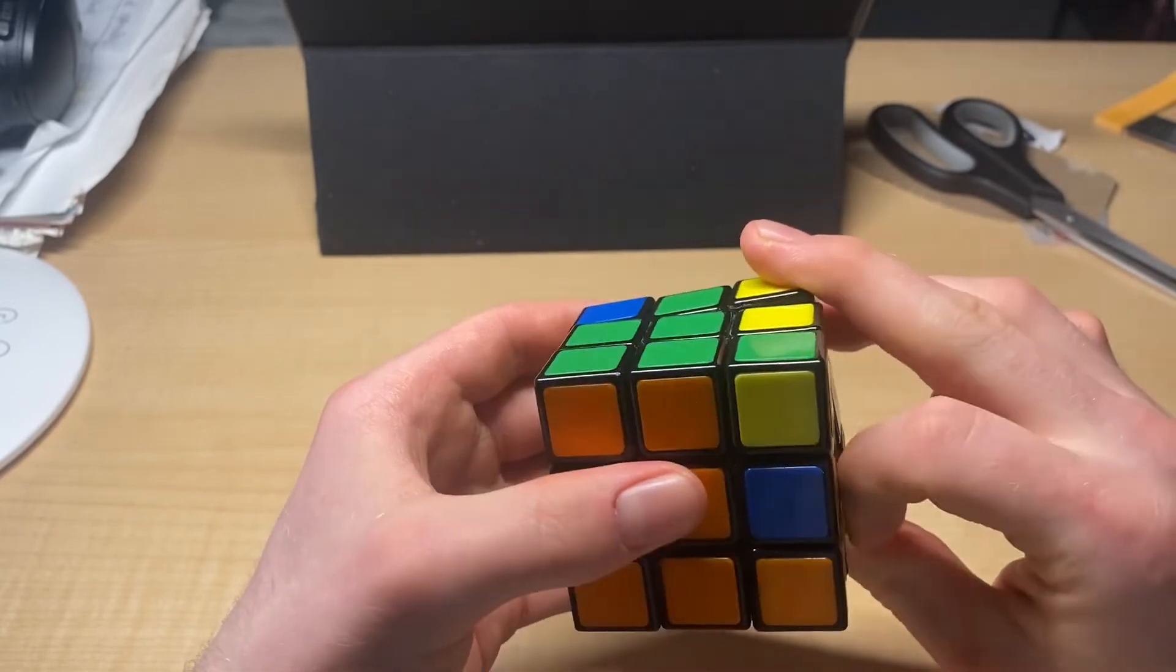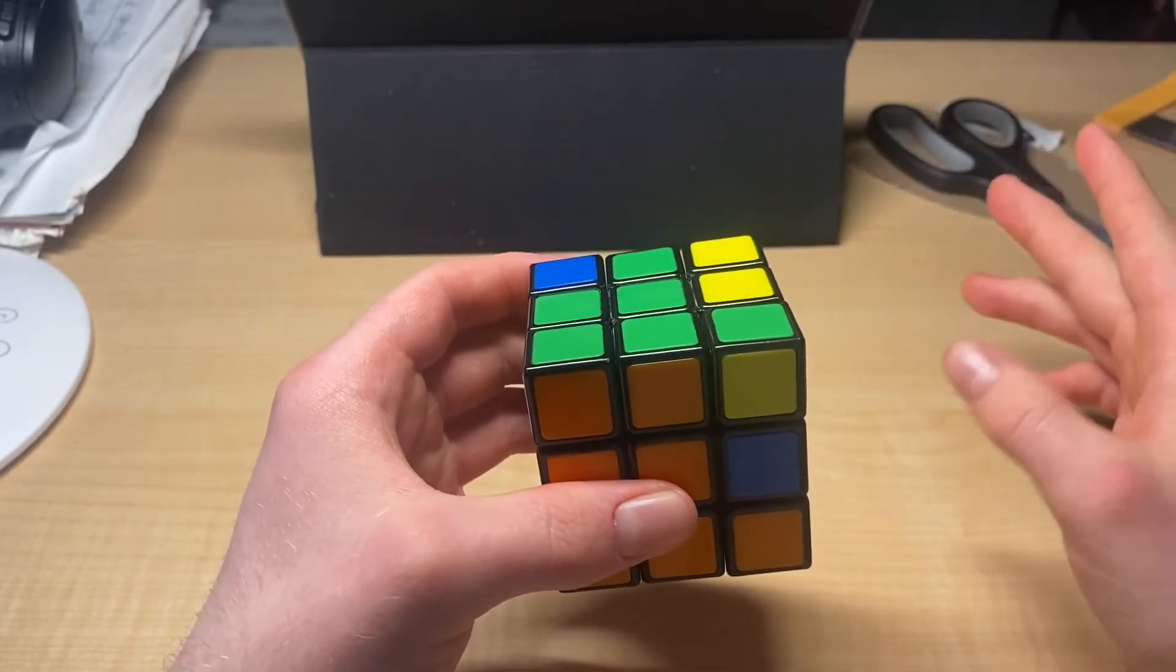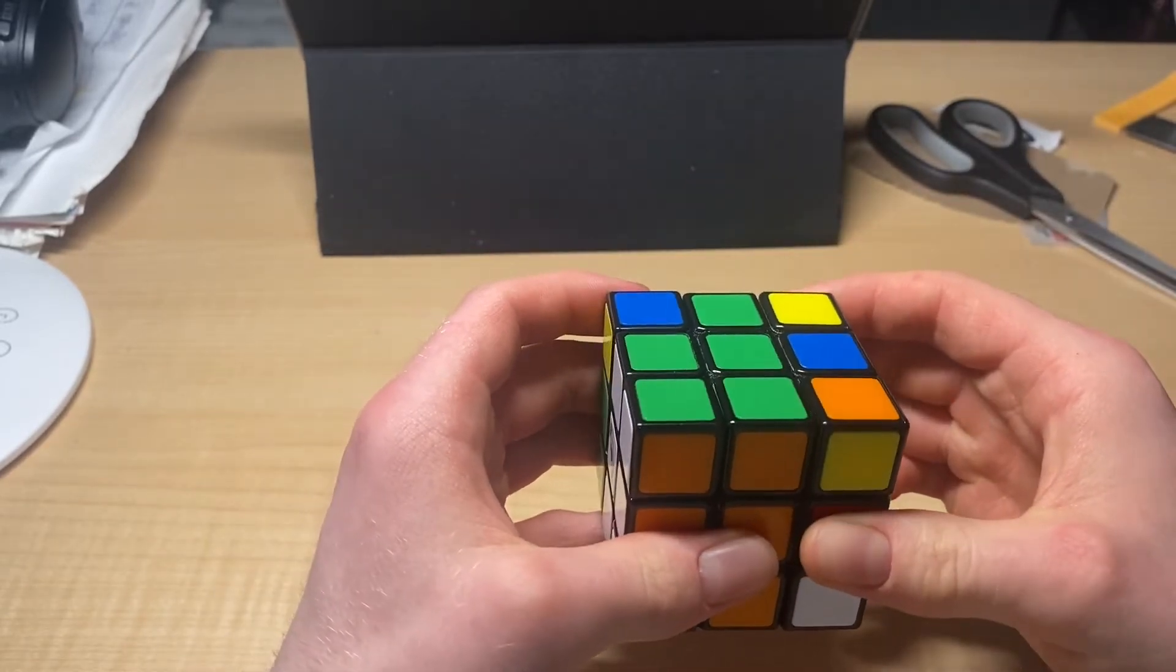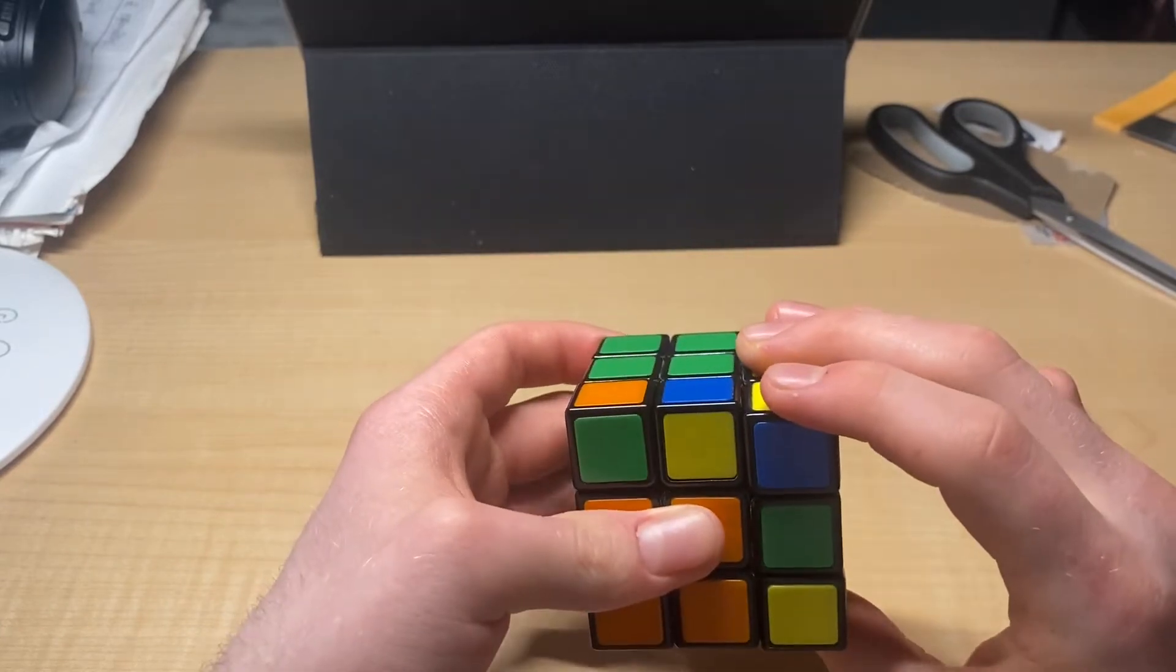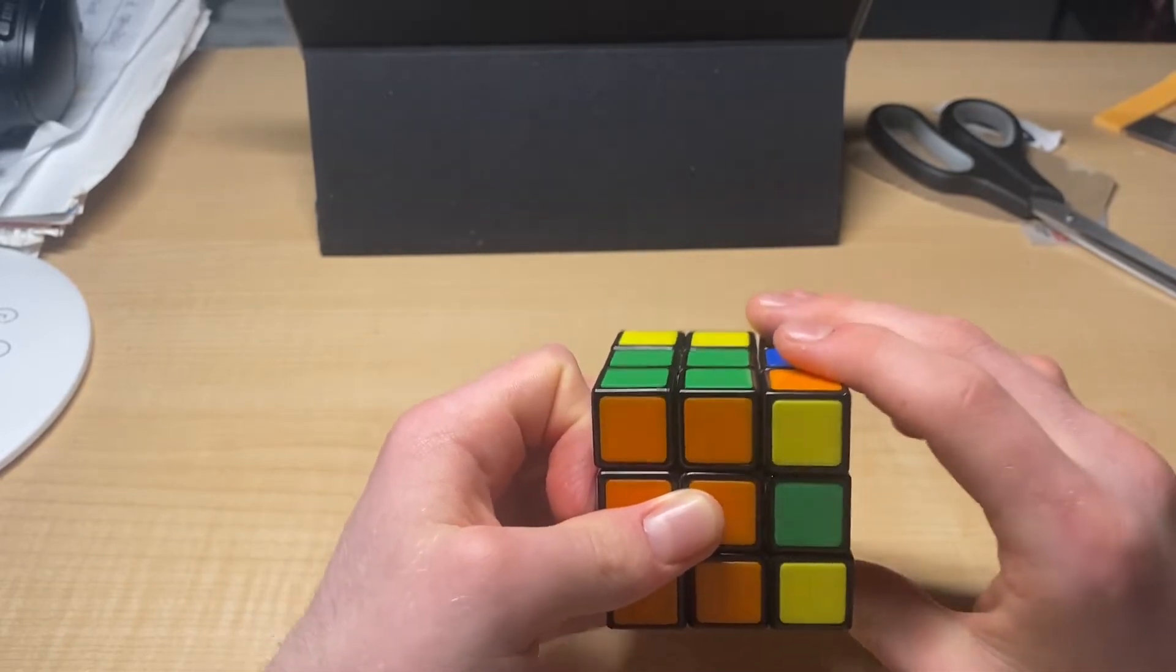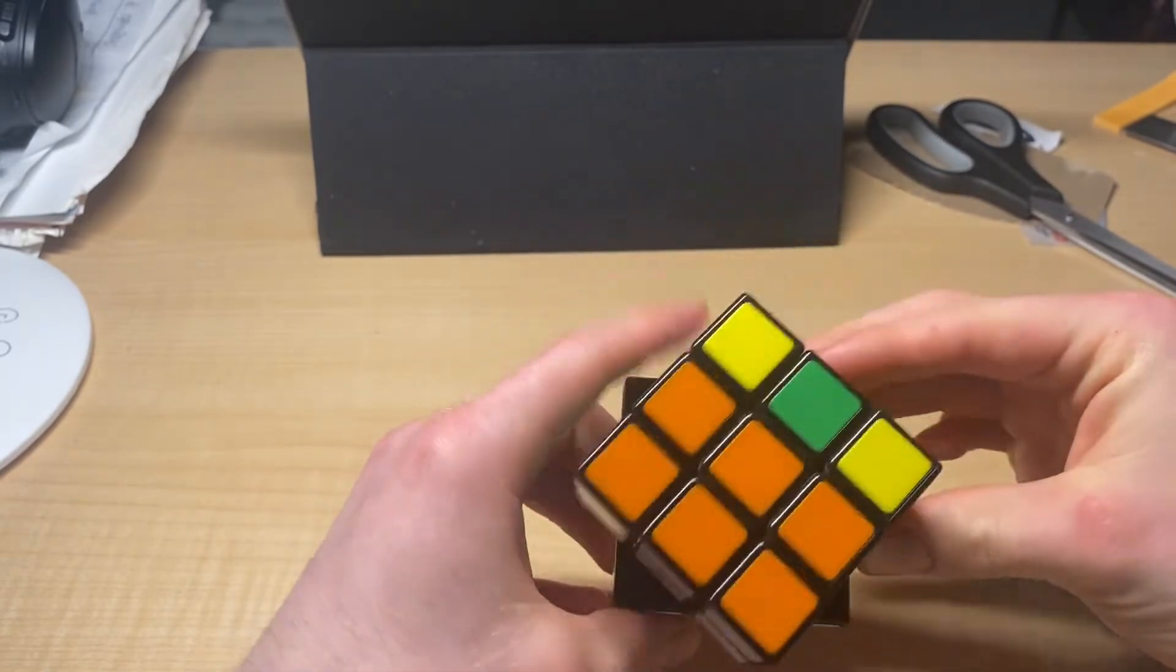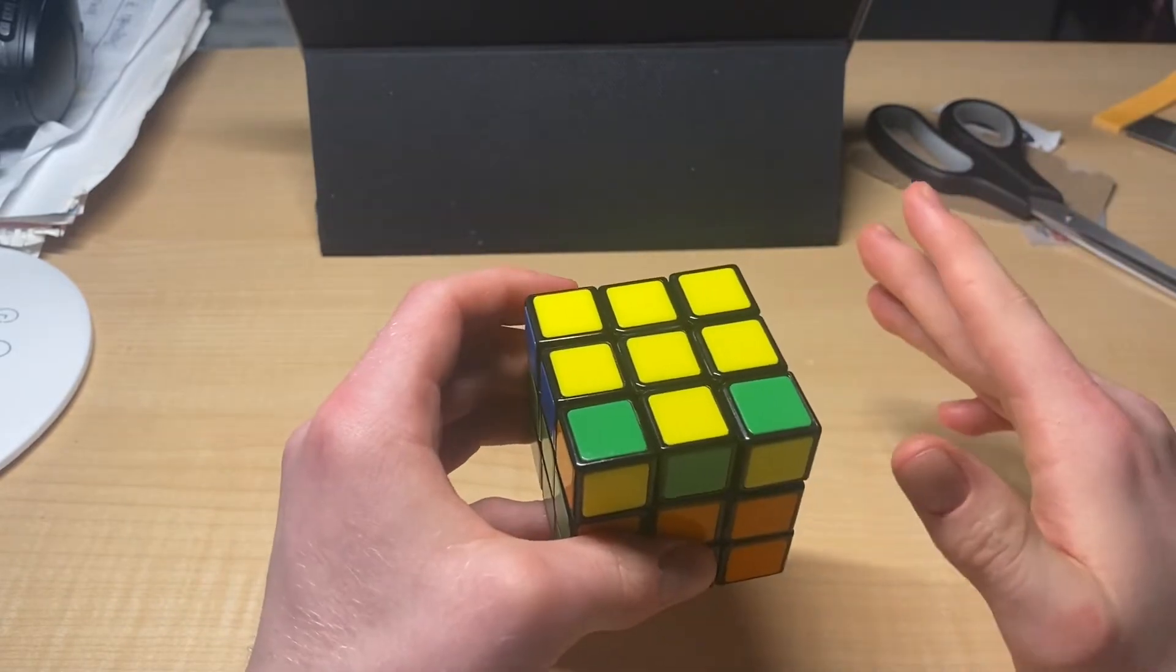So, it's f, lowercase f, then it's R, U, R prime, U prime, and lowercase f prime. So, you just undo that. So, then you bring it to here. This is the second step. We've got a cross established. Now, what do we do?